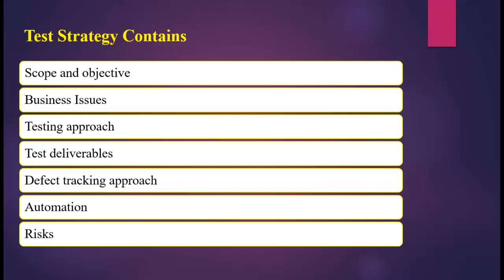Next is test deliverables — what documents are required from the testing team and how they keep records of the testing cycle. Defect tracking approach covers which tool will be used for tracking defects, how the testing team will communicate with the development team, and how the defect flow is decided — all defined at this point in the test strategy.